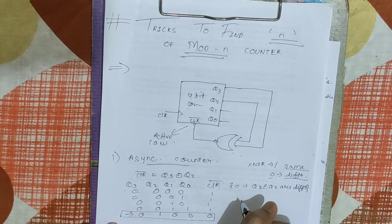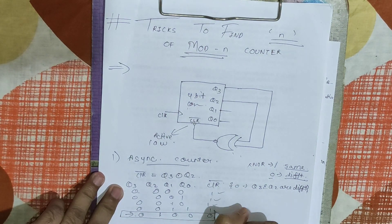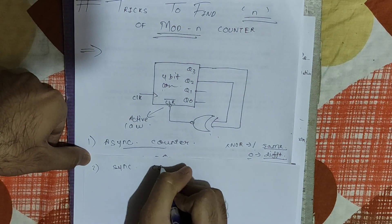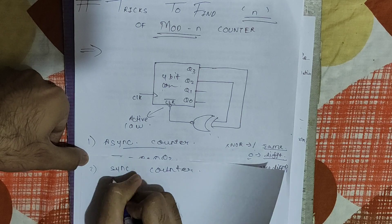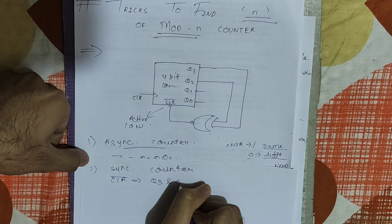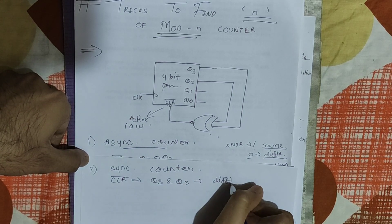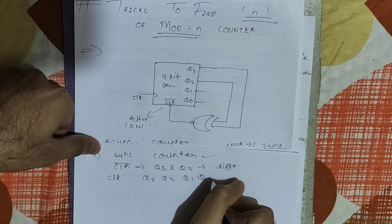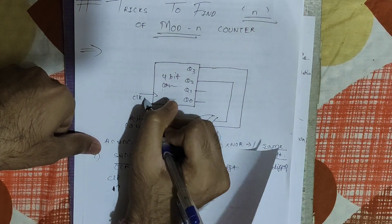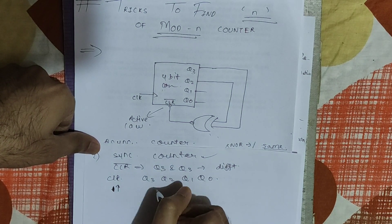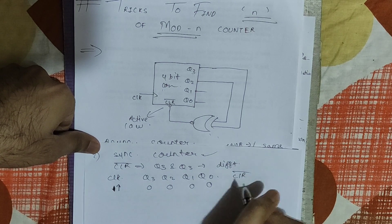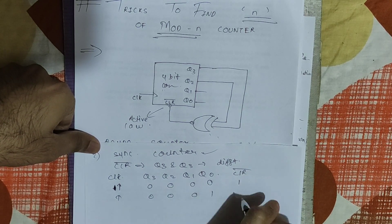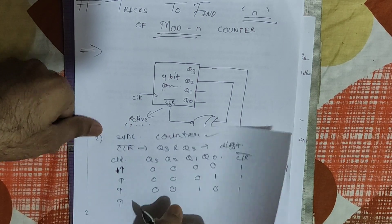So the number of states counted by this asynchronous counter is 1, 2, 3, 4 — making it a mod-4 counter. Now let's consider the same four-bit counter as a synchronous counter. For a synchronous counter, we also need to consider the clock. Using a positive edge-triggered clock, the states are: clock 1 → 0000 (clear-bar = 1), clock 2 → 0001 (clear-bar = 1), clock 3 → 0010 (clear-bar = 1), clock 4 → 0100.